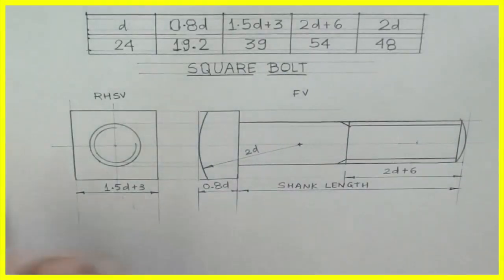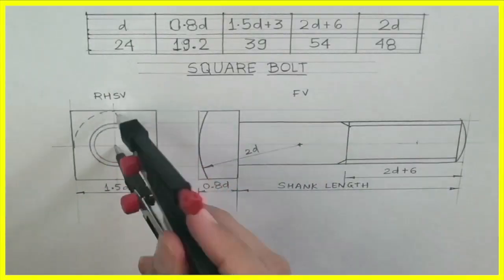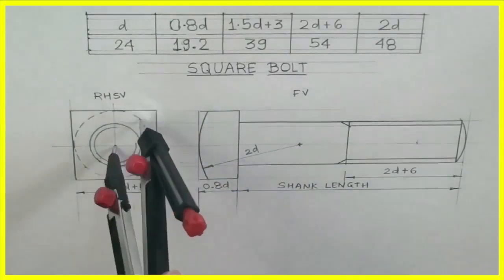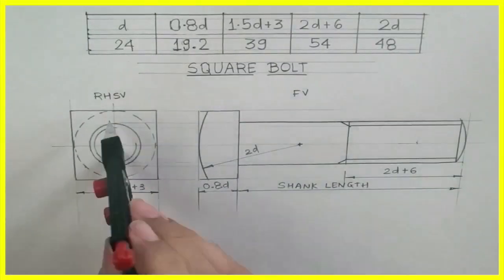Now there is one more thing which is remaining, that is chamfering circle. Now that will be dotted. Why? Because we are seeing it from the right-hand side. You can't see chamfering.